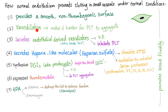The endothelium also helps with vasodilation. When the vessel wall expands, it's harder for platelets to aggregate because the surface area is increased. The endothelium secretes endothelium-derived vasodilators such as nitric oxide, which promotes vasodilation and inhibits platelet aggregation. It also secretes heparin-like molecules such as heparin sulfate, which — like heparin — stimulates antithrombin-3.